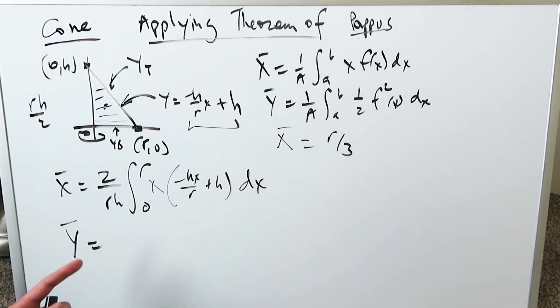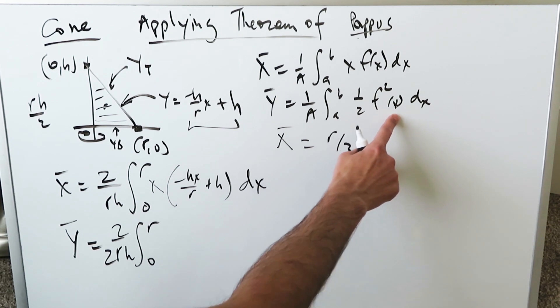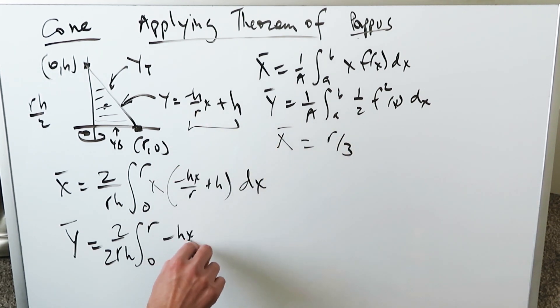When you do the y value of that centroid, what do you have? Again, 2 over rh. Again, 0 to r, but there's a 1 over 2. This 1 over 2, you might as well push it out. These 2s here, numerator, denominator would cancel out. Anyhow, this f(x) would be this: minus hx over r plus h, whole square, dx.